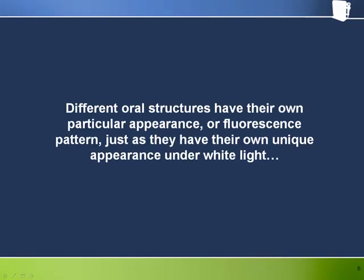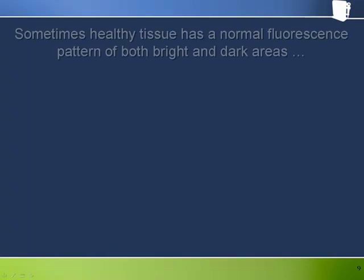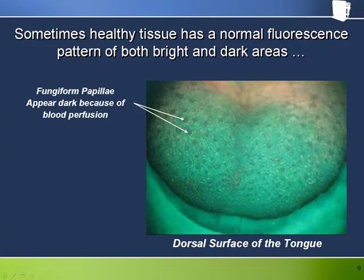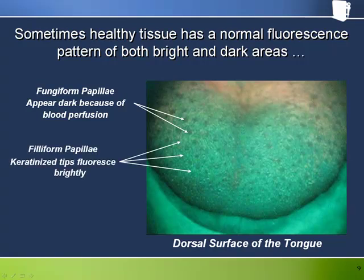We have to remember that with fluorescence visualization, different oral structures have their own particular appearance or fluorescence pattern, just as they have their own unique appearance under white light. Here we see healthy tissue with a generally homogenous pattern of bright and dark areas. The dark spots are the fungiform papilla, which appear dark because of blood perfusion and the lack of much keratin, and the smaller bright spots are the filiform papilla, which have keratinized tips that fluoresce quite brightly under Velscope.